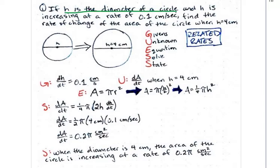It's increasing at a rate of 0.1 centimeters per second. Now, we want to find the rate of change of the area of the circle. And we want to do this when H is equal to 4 centimeters.